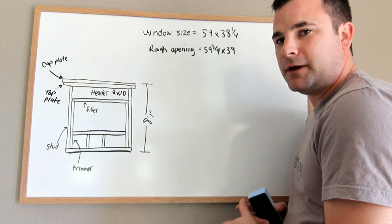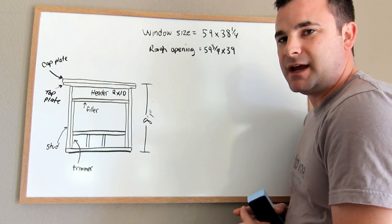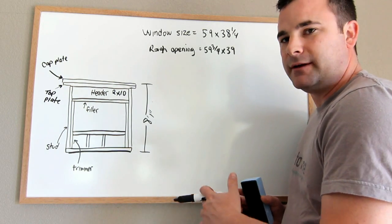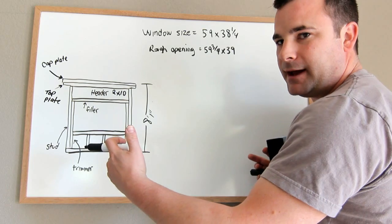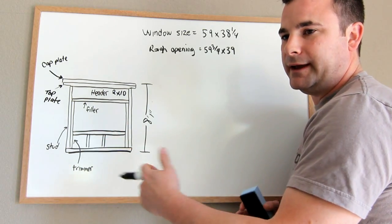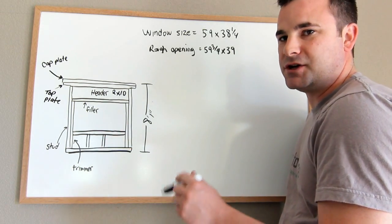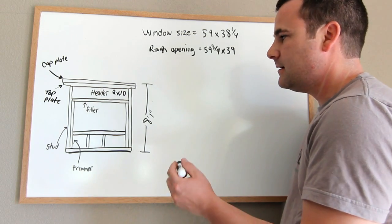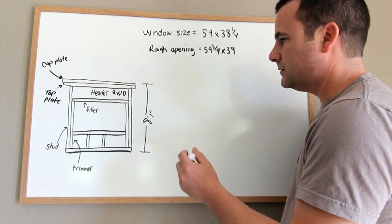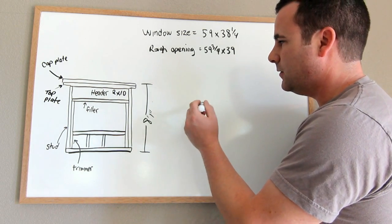Your header, depending on the code and what province or state you're in, depends on the clear span of the window and the weight loads and snow loads of the roof and everything. So you want to double check to make sure that you have a big enough header for your window or your door. Just always keep it to code.